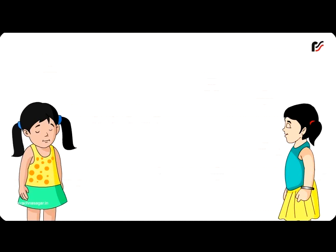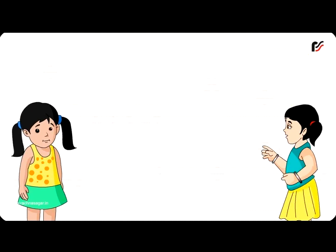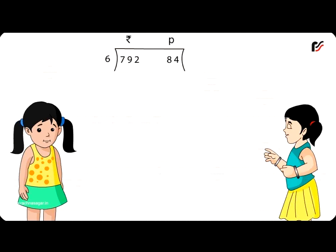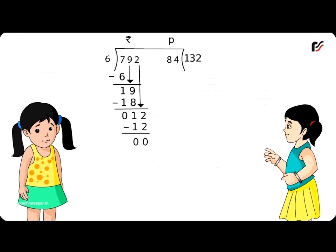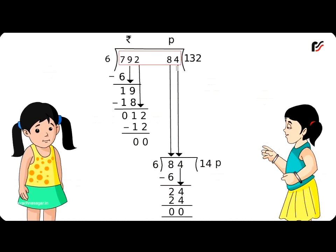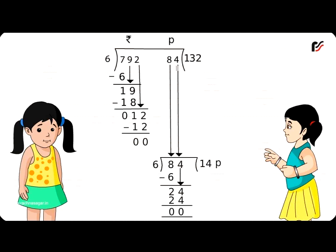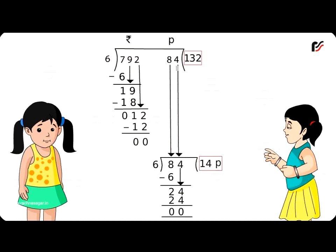Division of money is similar to division of ordinary numbers. For example, divide ₹792.84 by 6. Divide the figure in the rupees column first by 6. When we get the remainder as 0, bring down the figure in the paise column and divide it by 6. Thus, ₹792.84 ÷ 6 = ₹132.14.